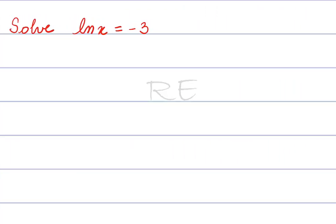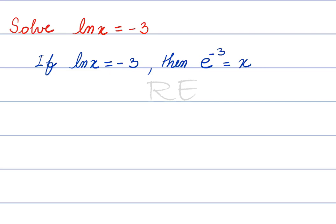Solve ln x equal to negative three. If the natural log of x is equal to negative three, then the base e to the exponent negative three is equal to x.